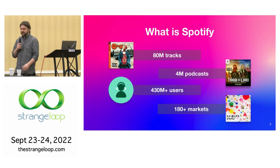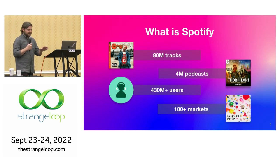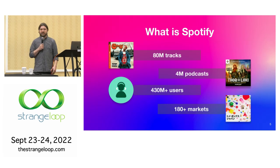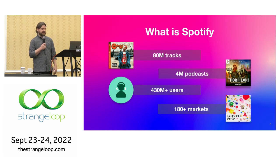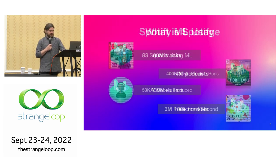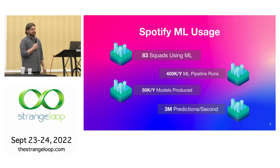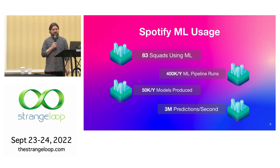Some background on Spotify: when I first started doing talks in the U.S. in 2013 about Spotify, not a lot of people used it. We now have about 80 million tracks on our platform, 4 million podcasts, and 400 million plus users in over 180 territories. We just launched audiobooks this week — that's our third format. For ML context: we have over 80 teams doing ML in some capacity, about 400,000 pipeline runs per year — actually about 50,000 pipeline runs — and our model-serving architecture serves about 3 million predictions per second.